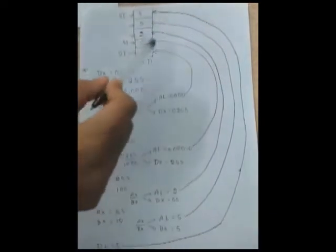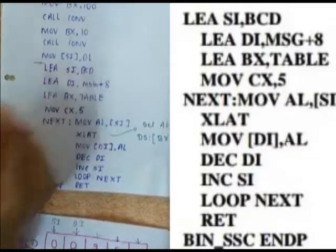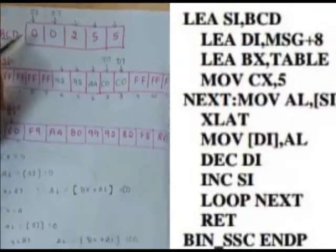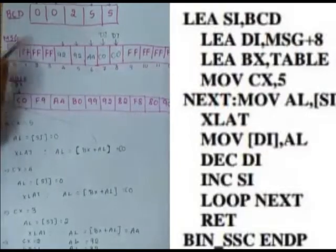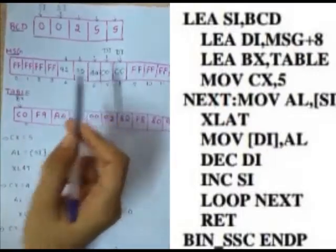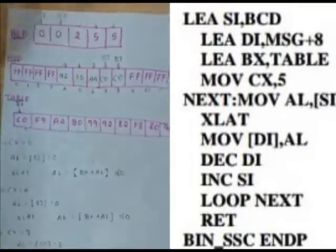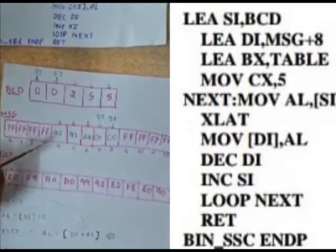Now we have the converted value of 16-bit binary to BCD. We just have to replace these values in the message. In the data segment we already have a message with spaces left to store the BCD values and a table to represent 0 to 9 with coded values. We have the BCD array with value 00255, the message with 5 spaces bounded by FFH, and the table with coded values to represent 0 to 9. Now let's put the BCD values into the spaces of the message.